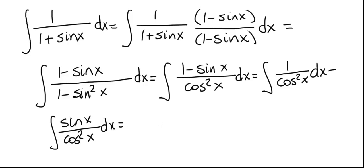And now let's rewrite this. 1 over cosine squared, that is secant squared x. In our second integral, let's rewrite it, 1 divided by cosine squared.